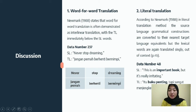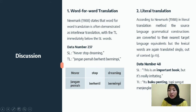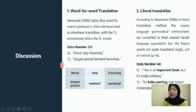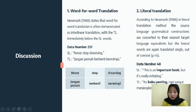The next method is literal translation. According to Newmark, in literal translation the source language grammatical constructions are converted to their nearest target language equivalents, but lexical words are translated singly out of context. In data number 48, the source language phrase 'this is an important book, but it's really irritating' is translated with 'important book' becoming 'buku penting.' In the source language, adjective precedes noun, but in the target language it is the opposite — demonstrating a change in grammatical structure.